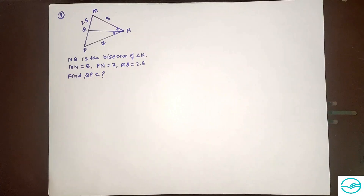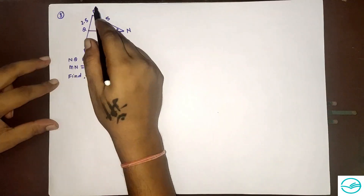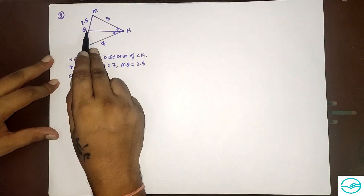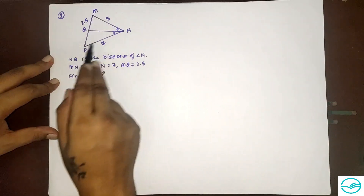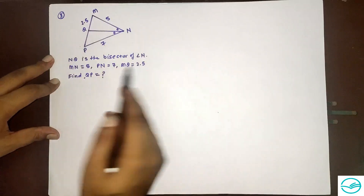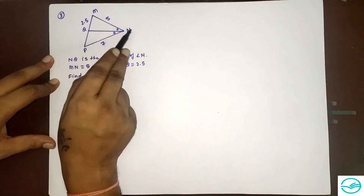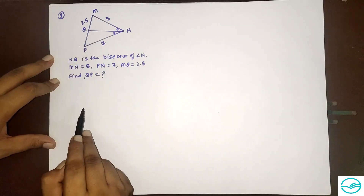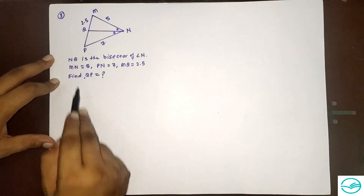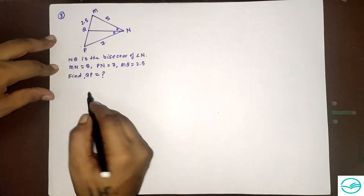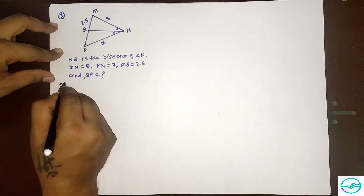Question number 3: In triangle MNP, NQ is the angle bisector of angle N. MN is 5, NQ is 2.5, and PN is 7. Find the value of QP.